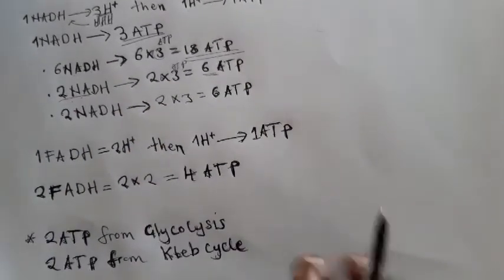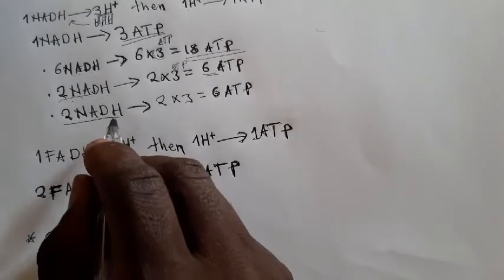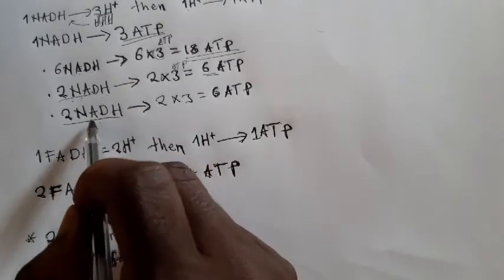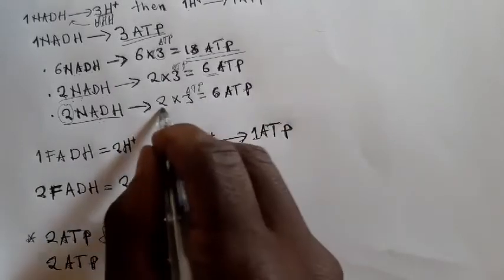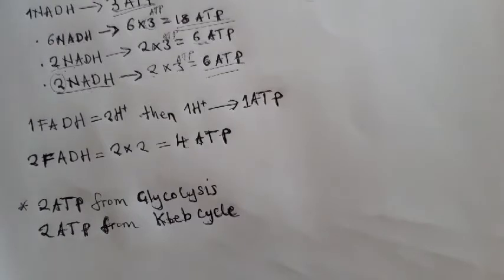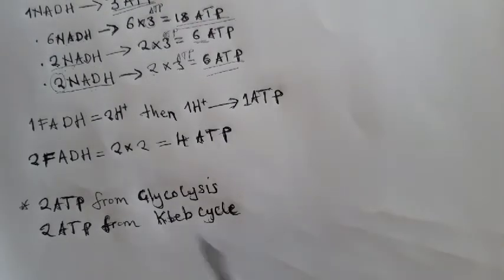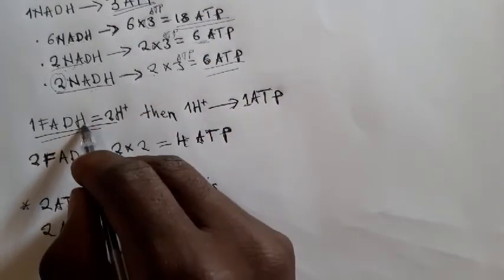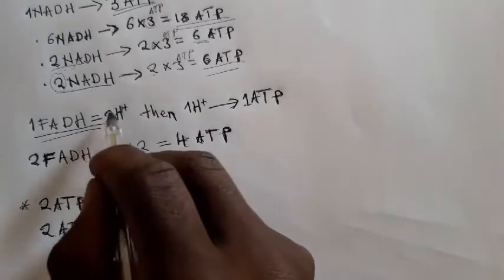Next, from the transition step we have 2 NADH. Since one NADH produces 3 ATP, two NADH produces 6 ATP — that is 2 times 3. The Krebs cycle also produces 2 FADH2. One FADH2 produces 2 hydrogen ions.